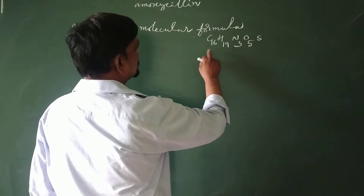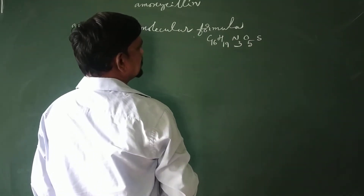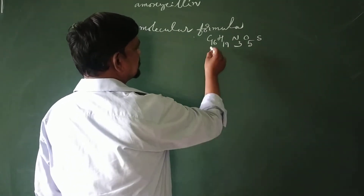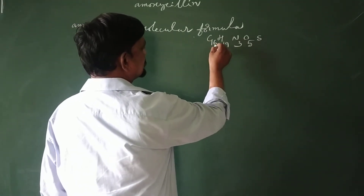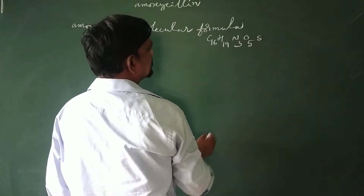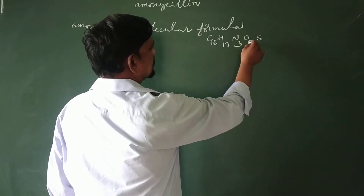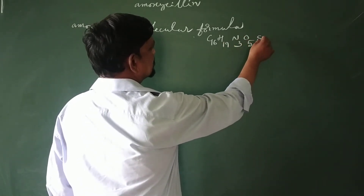This is amoxicillin's molecular formula. In this structure: Carbon-16, Hydrogen-19, Nitrogen-3, Oxygen-5, and Sulfur.